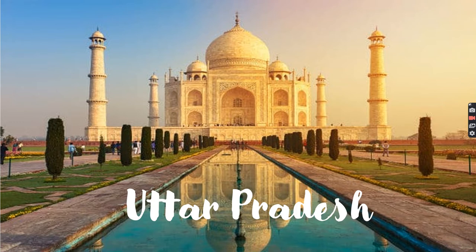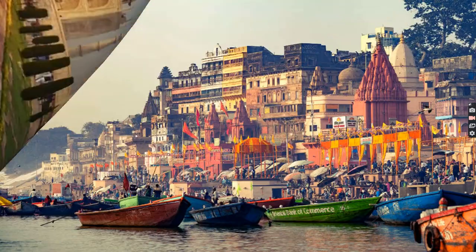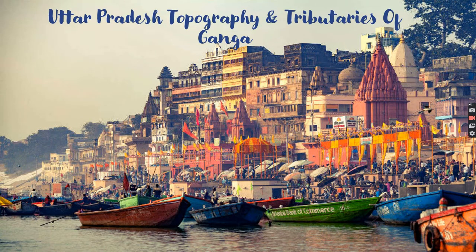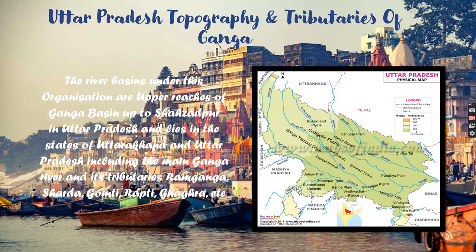Now we will talk about the basin in Uttar Pradesh — topography and tributaries of Ganga. The river basin under this region covers the upper reaches of the Ganga basin up to Shahzadpur in Uttar Pradesh, and lies in the states of Uttarakhand and Uttar Pradesh, including the main Ganga river and its tributaries: Ram Ganga, Sharda, Gomti, Rapti, and Ghagra.